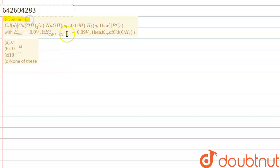Let me explain it to you. Given the cell, the E cell is given as 0.0 volt, and the E° for cadmium 2+ to cadmium is given as -0.39 volt. Then we have to find the Ksp of cadmium hydroxide.